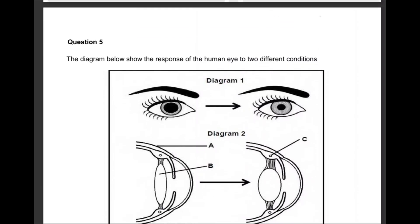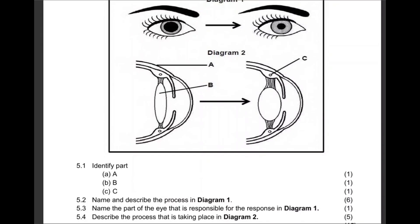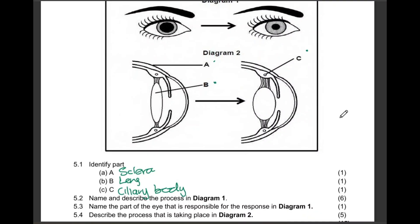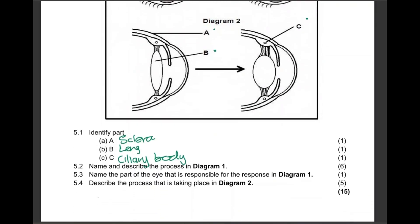The diagram below shows the response of the human eye to two different conditions. Identify parts A, B, and C. A is the sclera. B is the lens. C is the ciliary body.